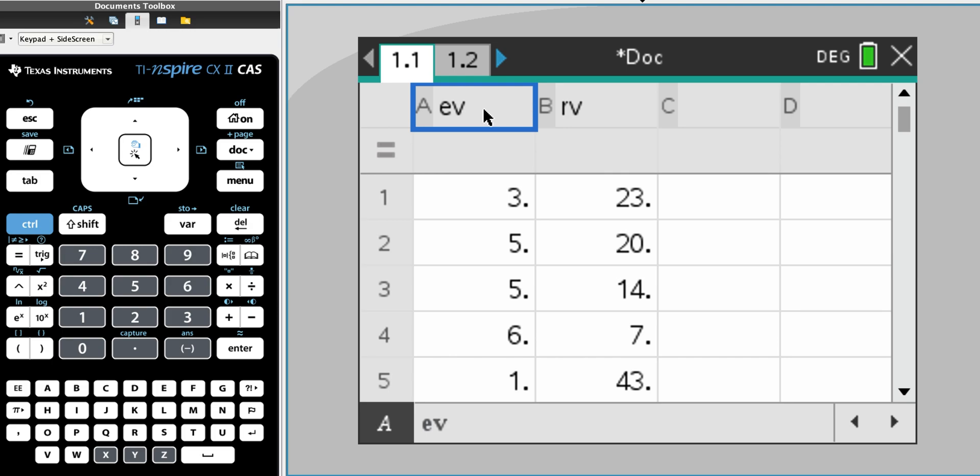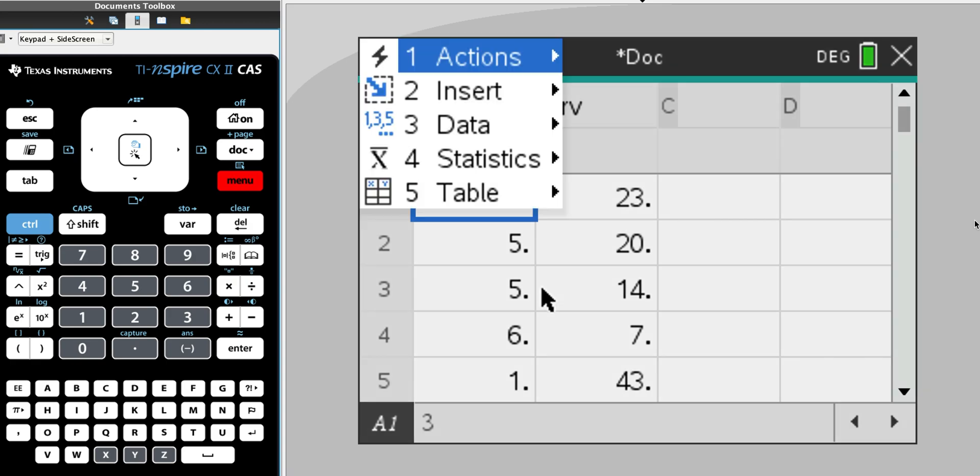I have my explanatory variable, which I've called EV, and my response variable, which I've called RV. I've simply put in the numbers from my research. From here, I go into menu, then statistics, stat calculations.